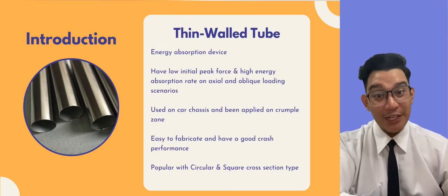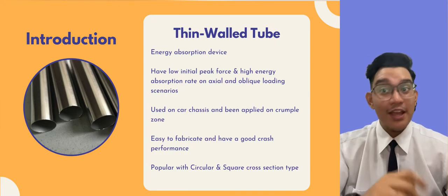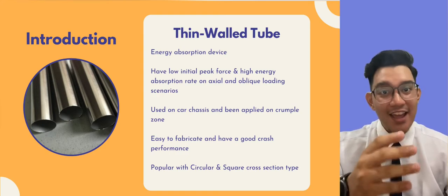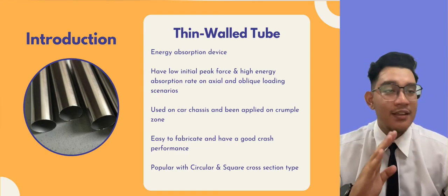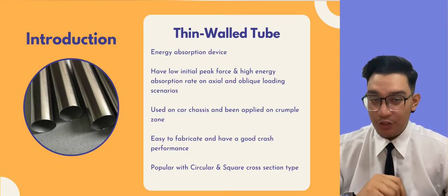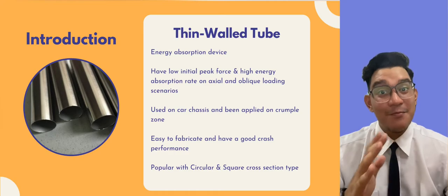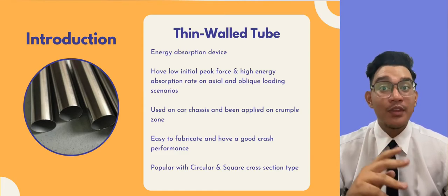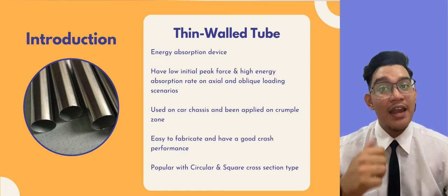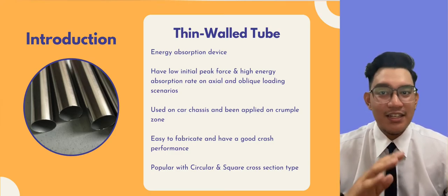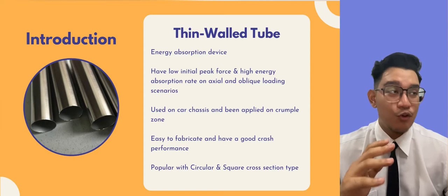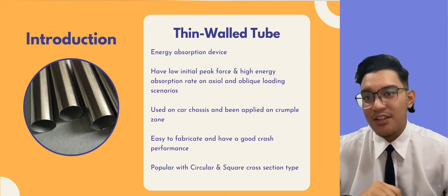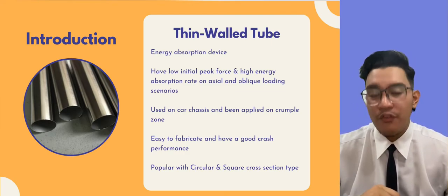First, let's begin with the introduction. Did you know about Thinwall Tube? Thinwall Tube is one of the energy absorption devices. It has low initial peak force and high energy absorption rate on axial and oblique loading scenarios. This tube was frequently installed on car chassis and applied on the crumple zone. It is popular in the vehicle manufacturing sector because it is easy to fabricate and has good crashing performance. The cross-sections typically used are circular and square type. In this study, a new design of Thinwall Tube is proposed to enhance the crashworthiness performance and energy absorption of the tube.